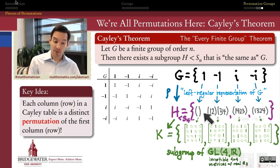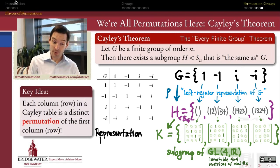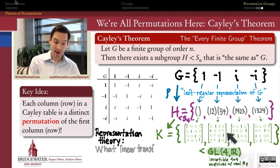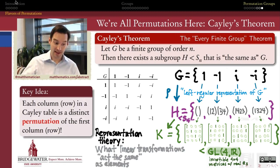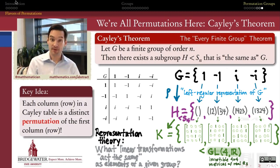So because I can represent permutations by matrix multiplication, and because I can represent any finite group by permutations, that means I can represent any finite group by matrices and get a representation of that group. You can check, for example, that because i squared is equal to negative 1, this matrix multiplied by itself is going to equal that matrix, and so on and so forth. And this is the first step in a very long story in abstract algebra called representation theory. Representation theory is where you ask: for a given group, how do I find linear transformations — matrices when that group is finite — that act the same ways as the elements of that group do?